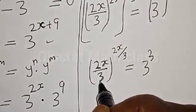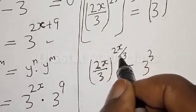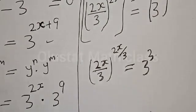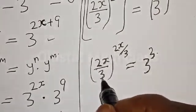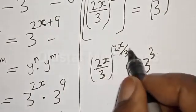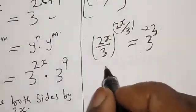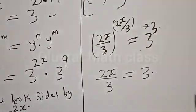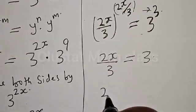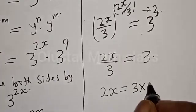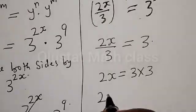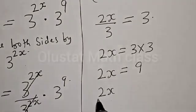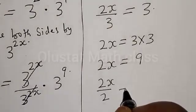So 2s divided by 3 is equal to 3, raised to power 3. Now by comparing, we have 2s divided by 3 equals 3, and the power 2x divided by 3 also equals 3. Therefore 2s divided by 3 equals 3. Cross multiplying, we have 2s is equal to 3 multiplied by 3, which is 9. Then 2s divided by 2 is equal to 9 divided by 2, and the 2s cancel, giving s equals 9/2.